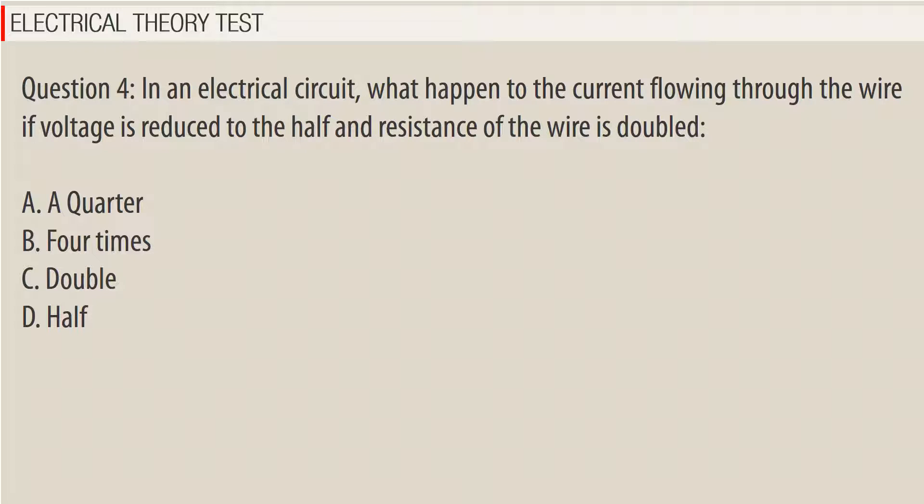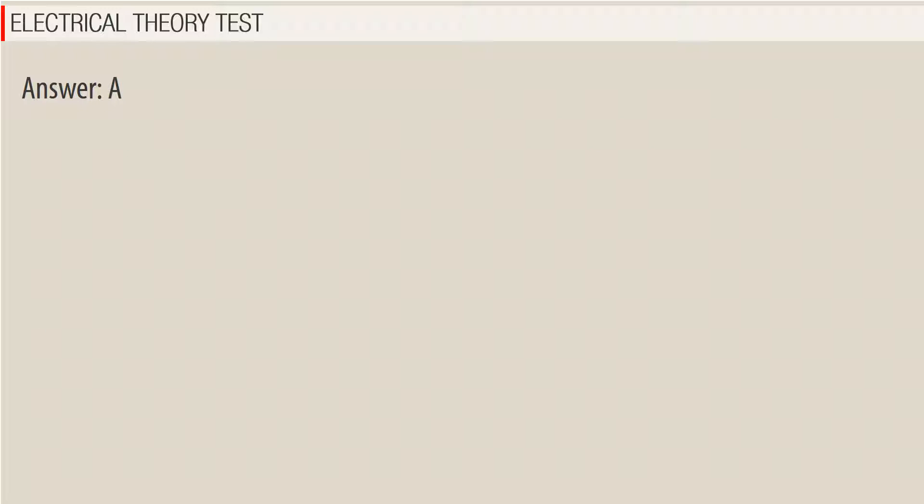Question 4: In an electrical circuit, what happens to the current flowing through the wire if the voltage is reduced to half and resistance of the wire is doubled? a) quarter, b) four times, c) double, d) half. Answer: A.